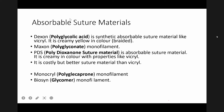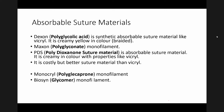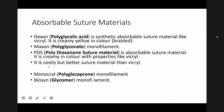Another absorbable synthetic suture is polydioxanone, also known as PDS, which is also an absorbable monofilament suture but is costlier than Vicryl and other sutures. Other examples of absorbable sutures are polyglycaprone — also called Monocryl — and Glycomer 631, both monofilament sutures.